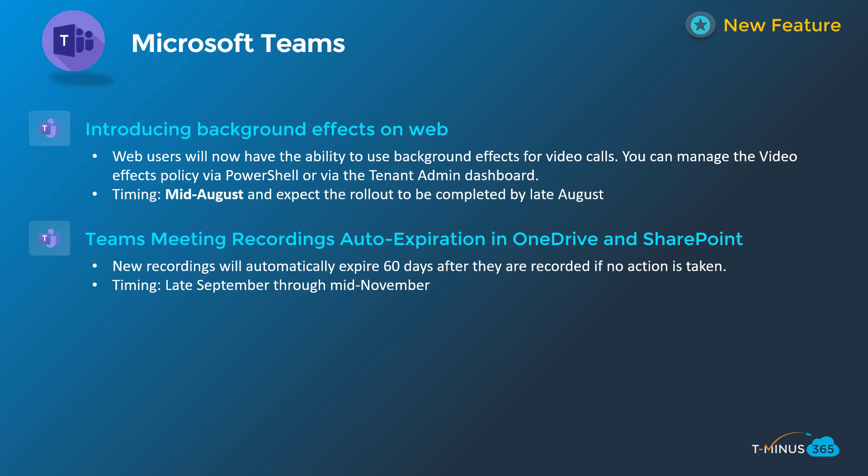The next one is more related to compliance. Teams meeting recordings will have an auto-expiration policy in OneDrive and SharePoint of 60 days. This is something you may want to look at in more detail if you want to set a default outside of the 60-day range. This is not going to be retroactive — it won't expire your existing Stream videos. It will apply to new recordings when it goes into production. There are many nuanced details, like being able to restore from a recycle bin, so definitely check the PDF I'll link below.